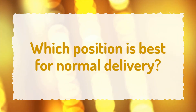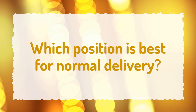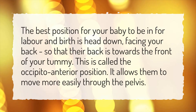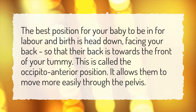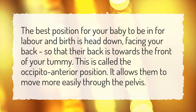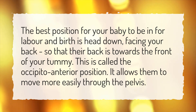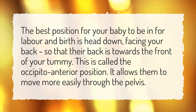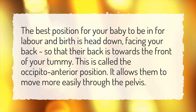Which position is best for normal delivery? The best position for your baby to be in for labor and birth is head down, facing your back, so that their back is towards the front of your tummy. This is called the occiput anterior position. It allows them to move more easily through the pelvis.